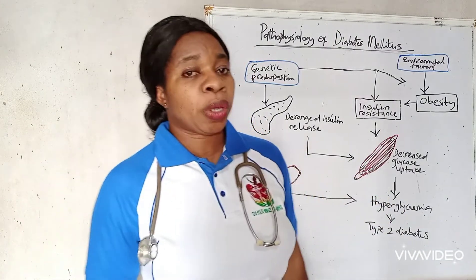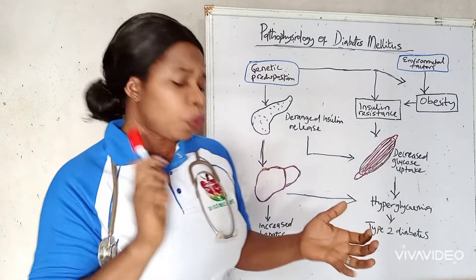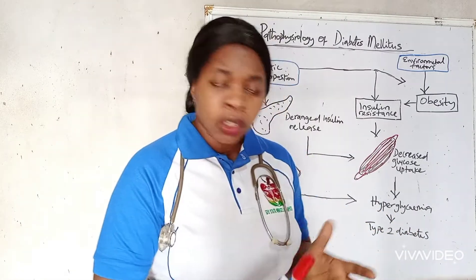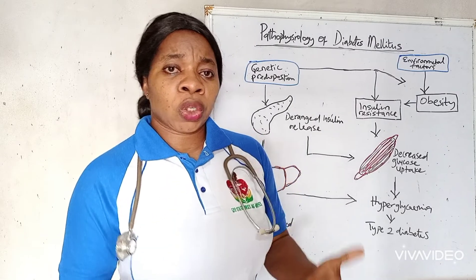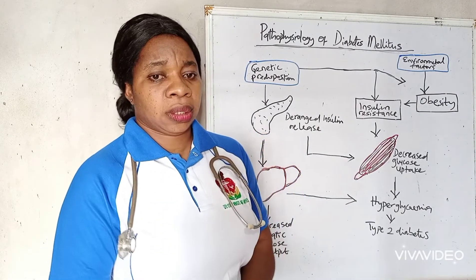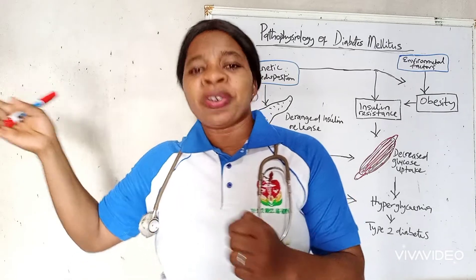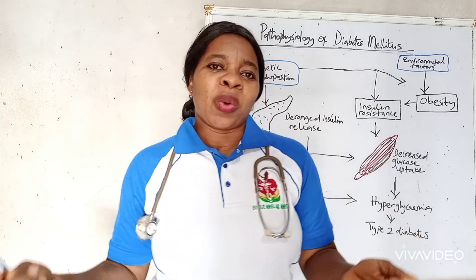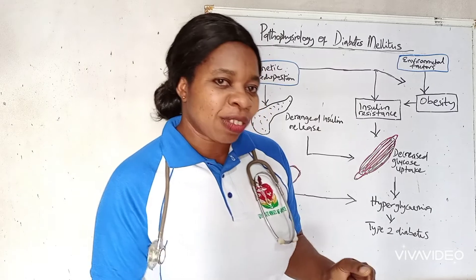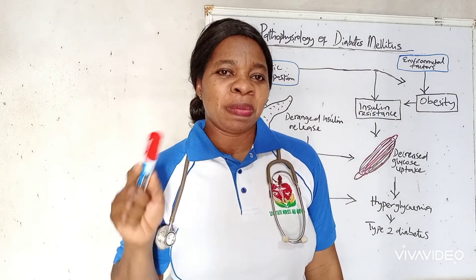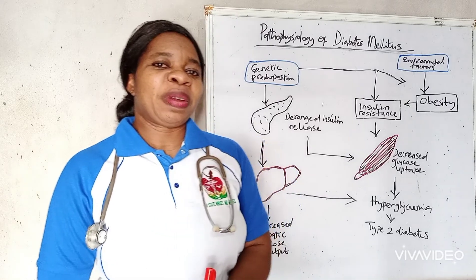Diabetes can be managed, but the main work depends on you. You have to make lifestyle modifications and changes — visit your doctor regularly, take your medications, eat well, and exercise. This can reduce the complications of diabetes. This is the first part of the topic; watch out for the next part. Thank you very much for watching. Please drop any suggestions or comments below, subscribe to my channel, and share this video with anyone who may benefit.